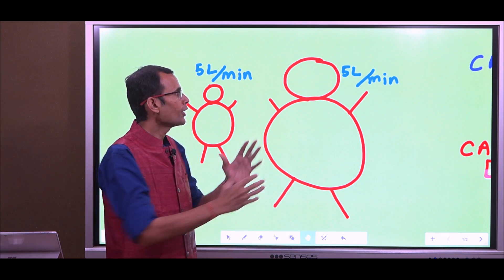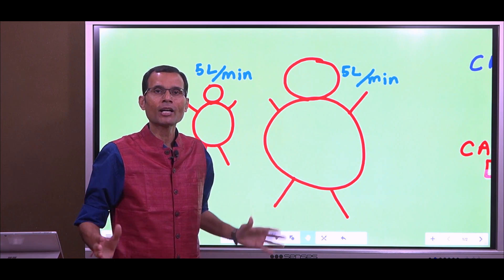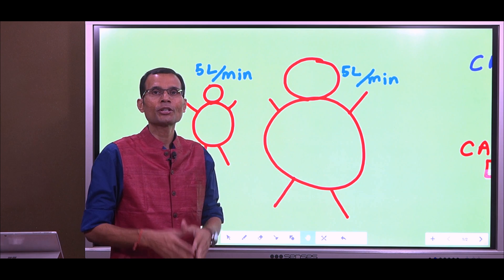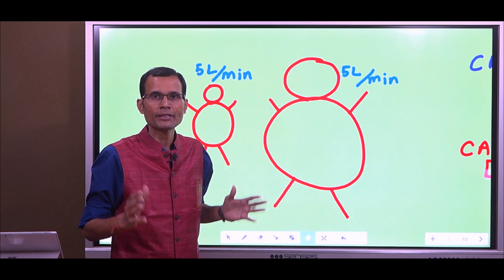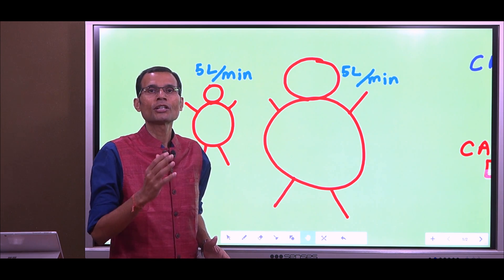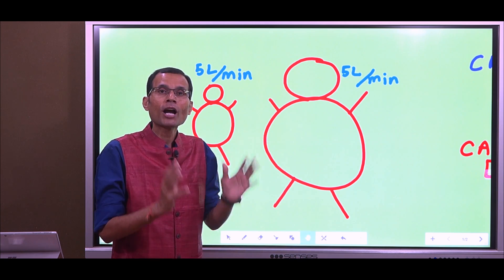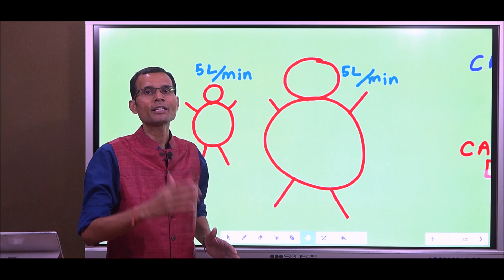So, the oxygen that is being supplied in the form of cardiac output may not be enough for the person who has got a greater tissue mass or greater surface area. That is the need to know the cardiac index. Cardiac output 5 liters per minute, fine. But for how much tissue mass it is being ejected out?